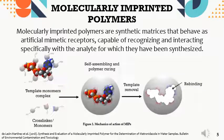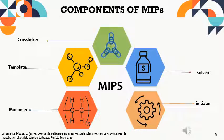Among these are molecularly imprinting polymers, defined as synthetic materials with molecular recognition properties. These are synthesized by combining a functional monomer, which is the main part of the polymer, with the template molecule, which is what is required to imprint in our polymer matrix, along with a cross-linker agent responsible for giving it the morphology, porosity, and three-dimensional structure. Also, the solvent is responsible for dissolving all compounds and giving porosity to the material. Finally, the initiator is added, responsible for initiating the polymerization reaction.